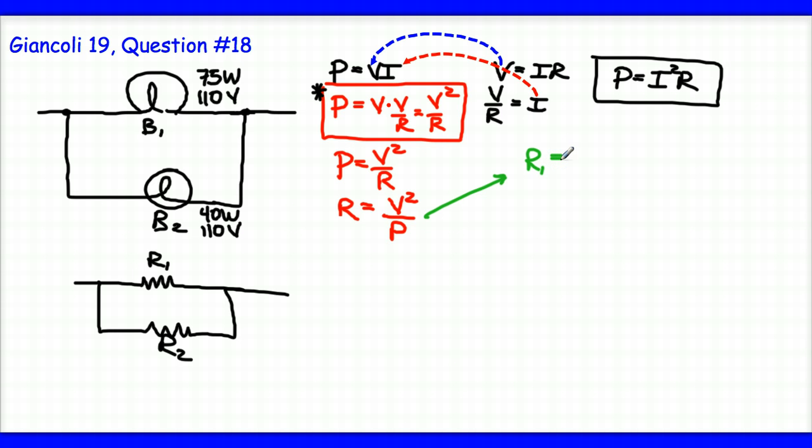Now I could say, well, bulb number one - the resistance of bulb number one in terms of voltage and power is going to be V squared for bulb number one over the power rating of the bulb, or 110 volts squared over the 75 watts. When I do that, I'm going to get about 161.3 ohms.